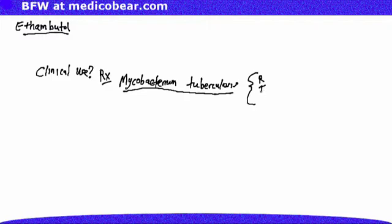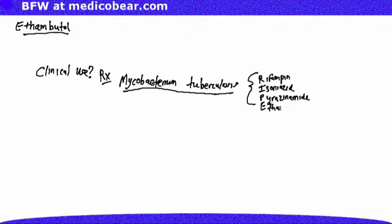Those four drugs can be remembered by the mnemonic RIPE: R for rifampin, I for isoniazid, P for pyrazinamide, and E for ethambutol.